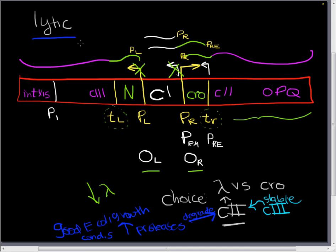On the other hand, when nutrients are limiting, we're under starvation conditions for E. coli. These cellular proteases are really more or less inactive. And so they don't degrade C2 very much. We make a lot of lambda protein. We have very low amounts of crow.